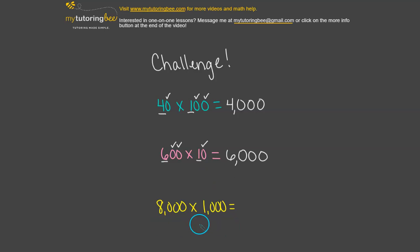All right. Last challenge problem. We've got 8 times 1. That gives us 8. And then let's see how many zeros we have. 1, 2, 3, 4, 5, 6.